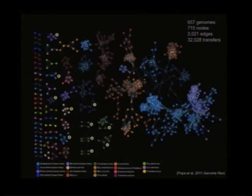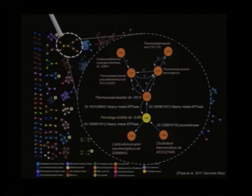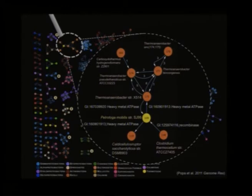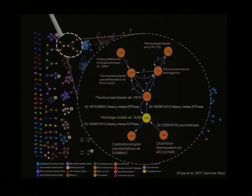The nodes in this directed network are prokaryotic genomes, connected by edges showing lateral gene transfer events; node colors represent main microbial groups from the literature. Zooming in, one cluster shows a Thermotoga (yellow node) and distantly related Clostridia (orange), with several inferred gene transfer events involving heavy-metal ATPases. These are very distantly related prokaryotes but all extremophiles thriving at very high temperatures, suggesting they met in a common habitat where it was beneficial to exchange genes.